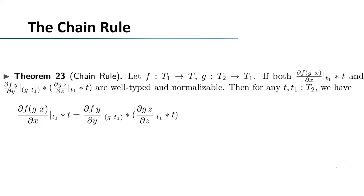The second theorem is the chain rule. This is a little bit different from the chain rule we usually know, because we add a multiplication by t on the right-hand side of both sides of the term. This is because the type of the derivative of the compound function would mismatch the type of the multiplication of derivatives, but adding a multiplication of t solves this problem. The t here is only to ensure the types of both sides match, so t can be any arbitrary term as long as it makes the chain rule well-typed. The proof is also based on induction on types with a similar structure to the previous proof.